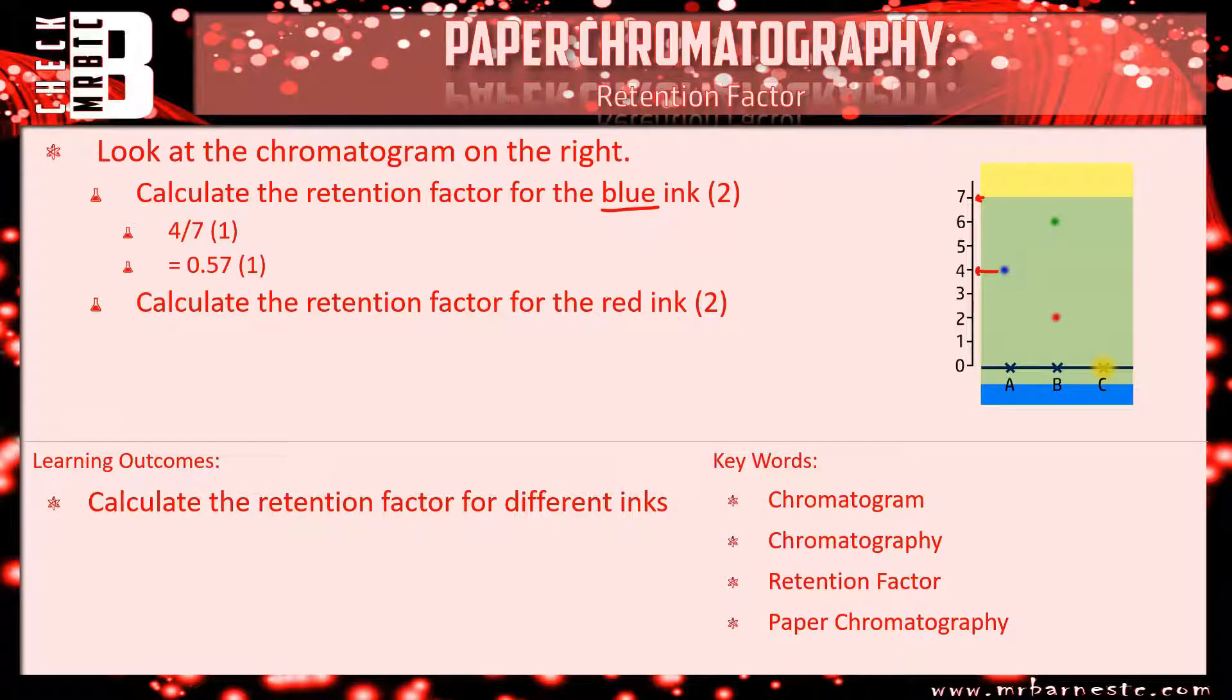And then second question, calculate the retention factor for the red ink. So we go across again. It's always a good idea to use a ruler in the exam to get it exactly right. We've got two centimeters. Again, the water's moved seven because it's the same chromatogram, so it's two divided by seven which comes out to 0.29 rounded to two decimal places.